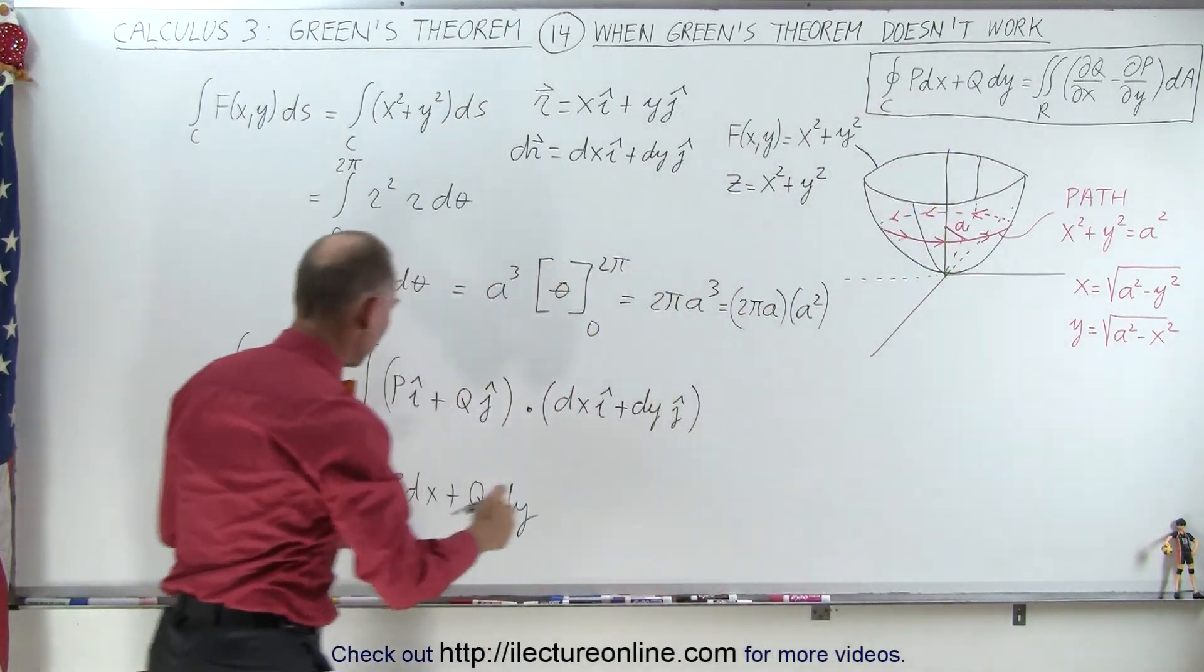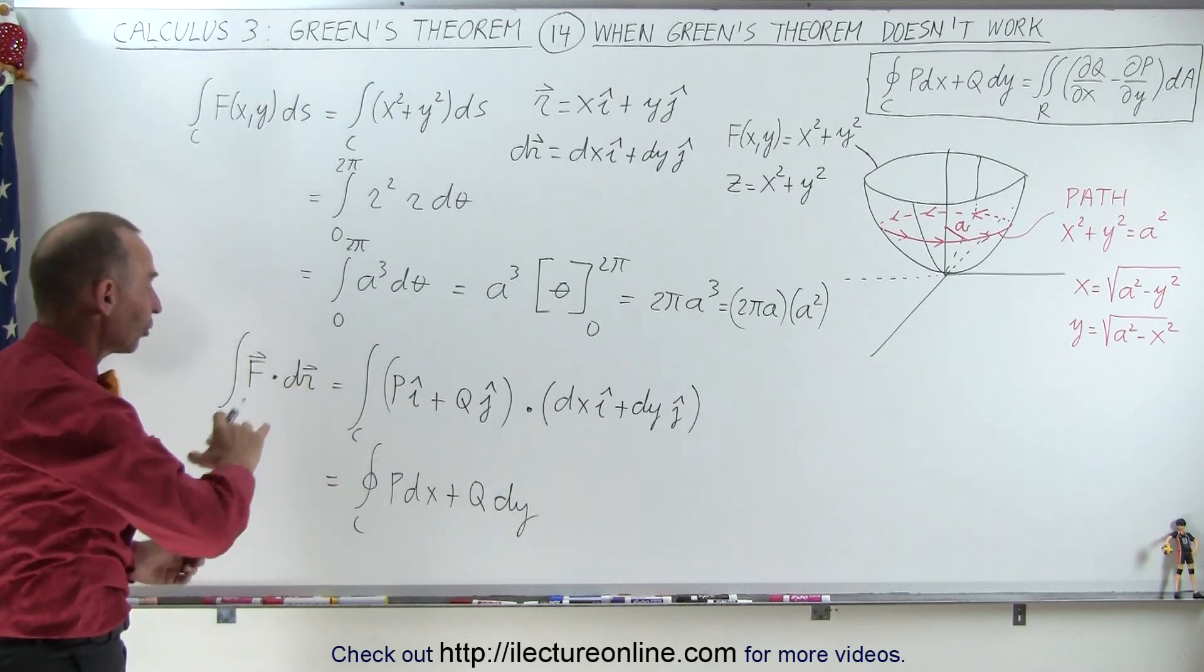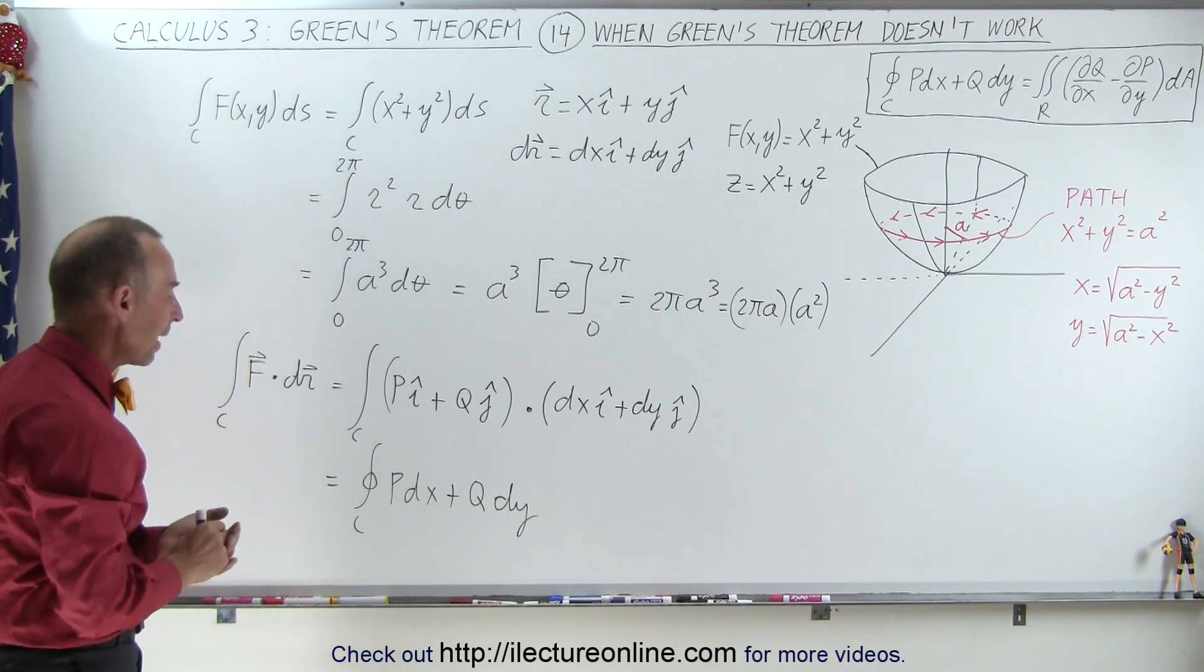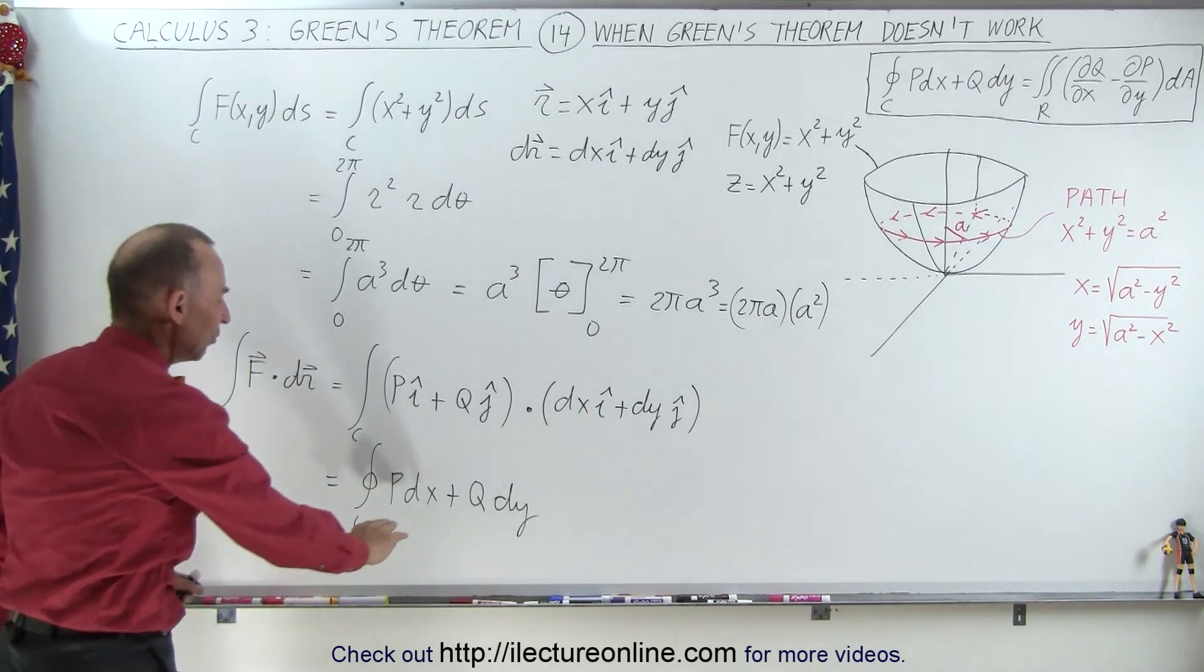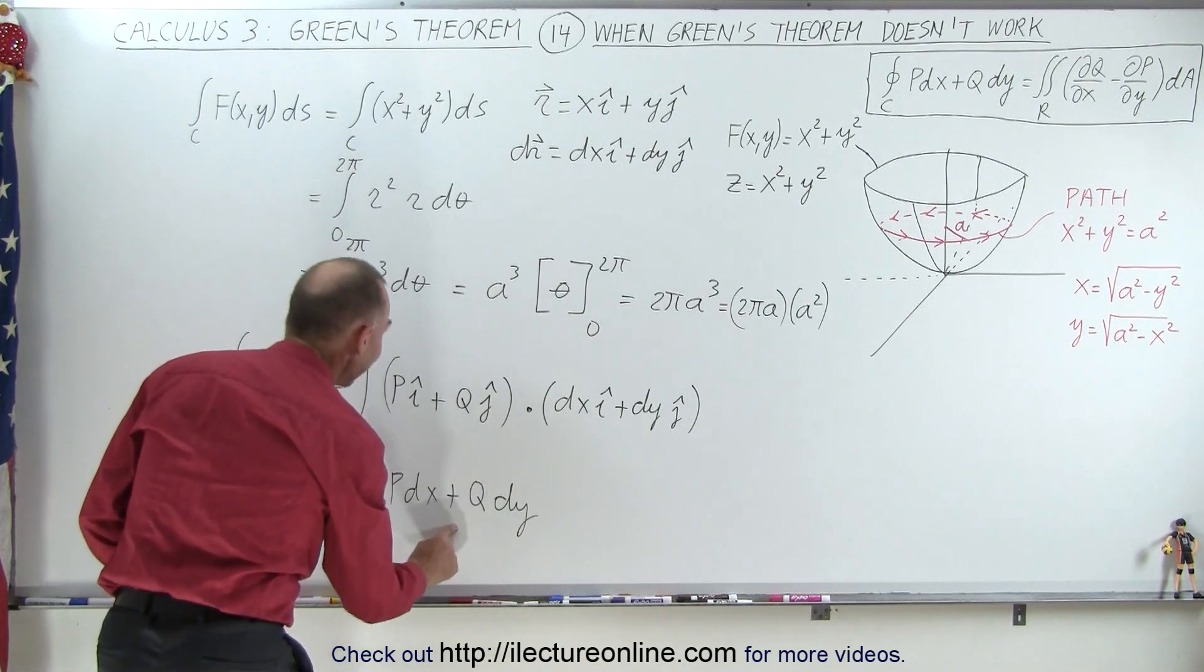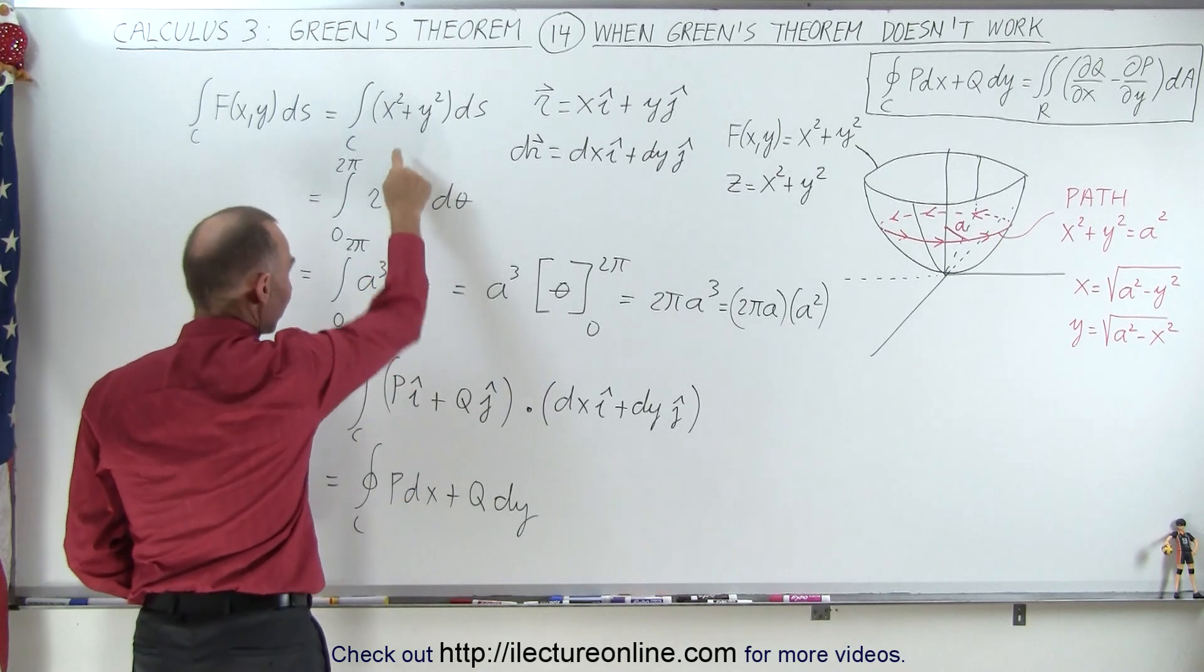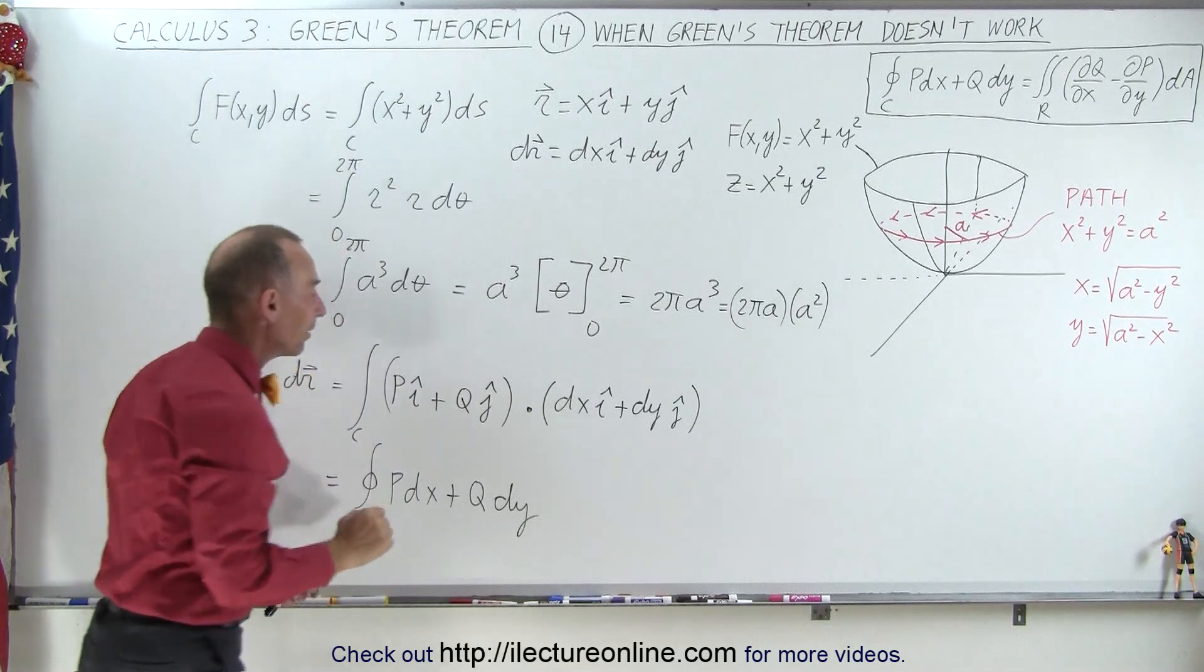And so this would be the left side of Green's theorem. And then of course, to use Green's theorem, you have to integrate over a complete path where you start and end at the same point. It doesn't have to be circular. Now notice that this form of the equation on the left side of Green's theorem is not the same as this. We don't have some function of xy times dx plus some function of xy times dy.